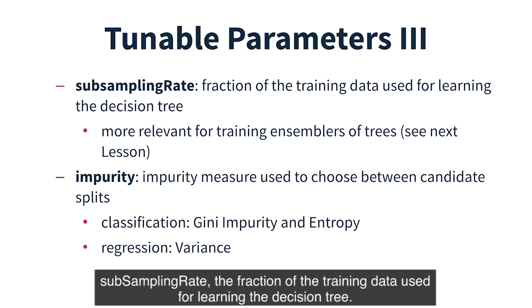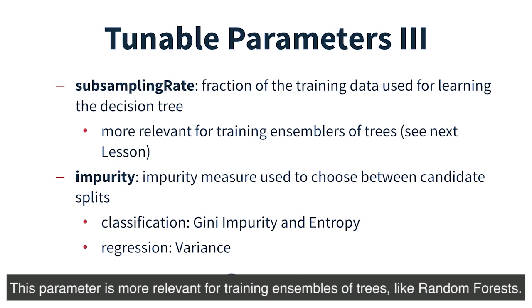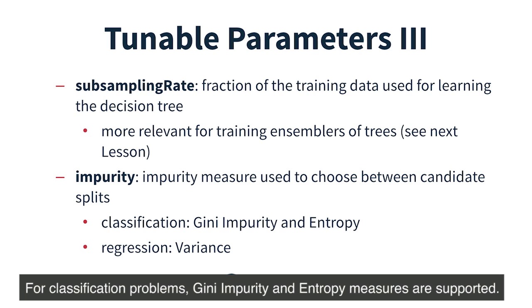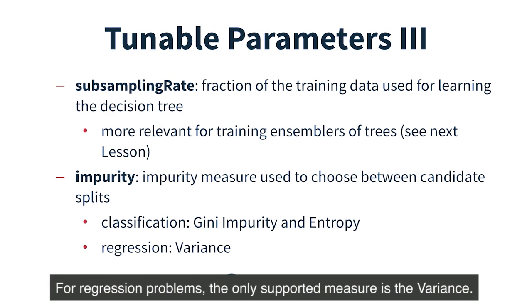Subsampling rate is the fraction of the training data used for learning the decision tree, and is more relevant for training ensembles of trees like random forests. Impurity is the impurity measure used to choose between candidate splits. For classification problems, Gini impurity and entropy measures are supported. For regression problems, the only supported measure is the variance.